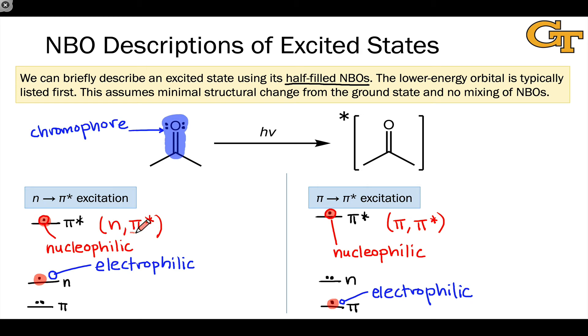The π* orbital is nucleophilic because it now contains an additional electron, and that's true of both excited states. Where these excited states differ is in the nature of the electrophilic orbital: the n orbital serves that role in the n-π* excited state, and the π orbital serves that role in the (π, π*) excited state.